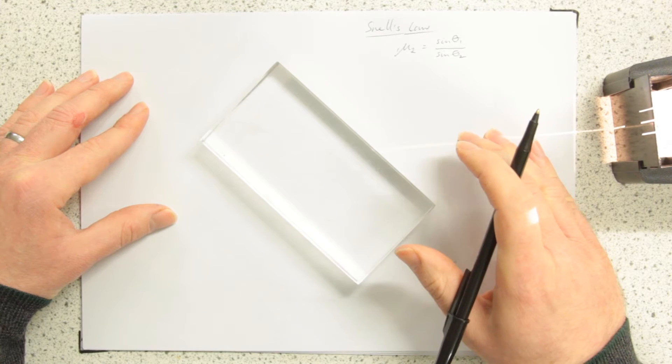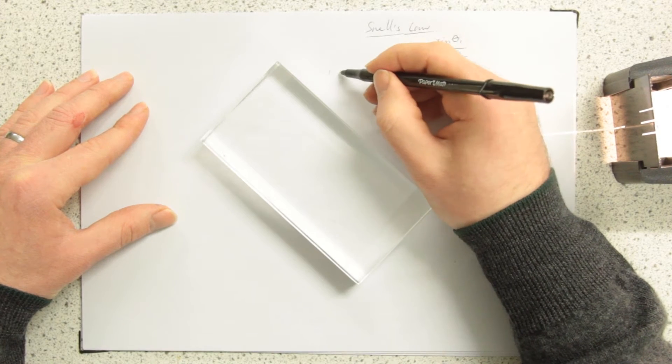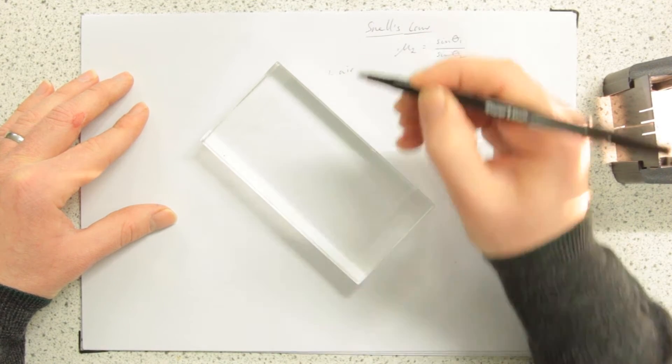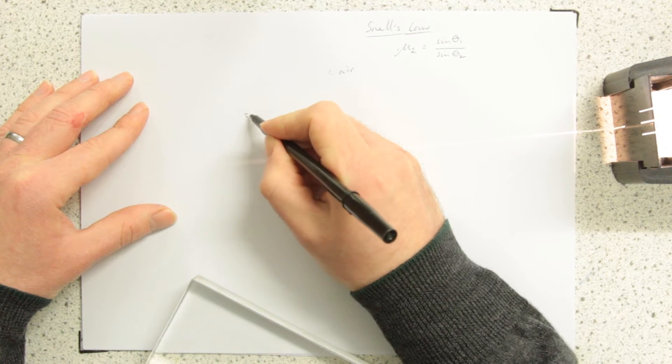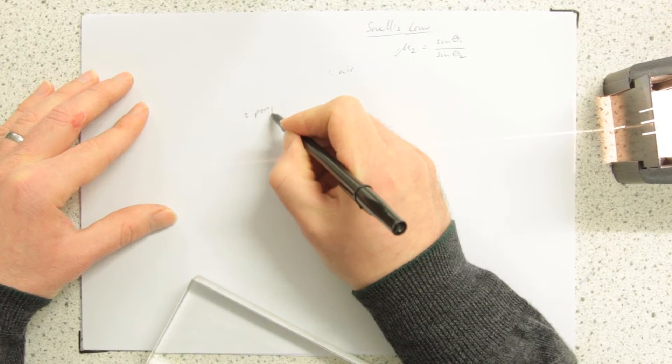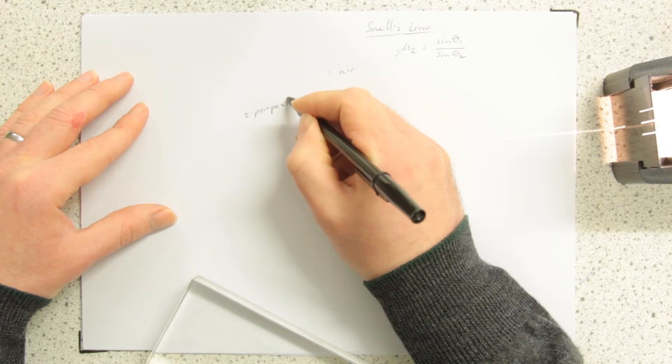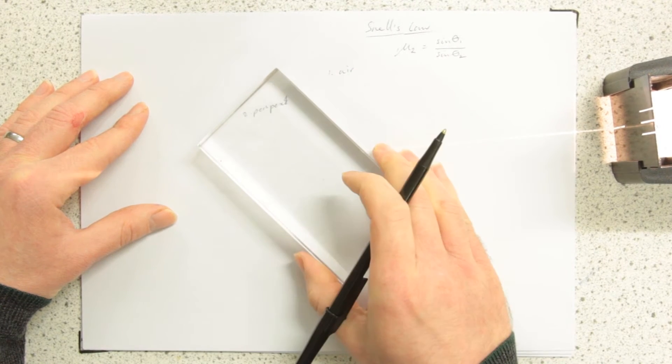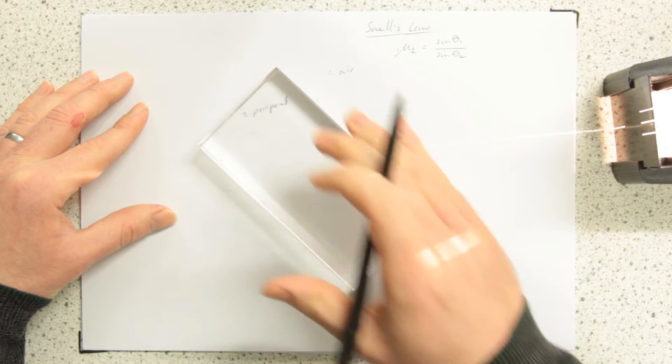So in this case our first medium one is air and our second medium is perspex. And we're interested to know what is the refractive index from air to perspex.